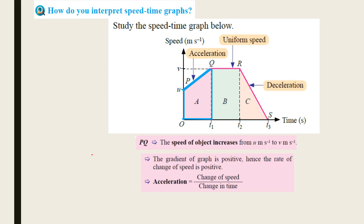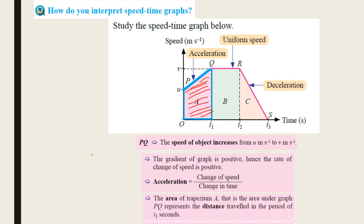The area under the graph represents the distance traveled. Here, the area under the graph for PQ forms a trapezium. That area represents the distance traveled in the period of t1. So you can find the distance traveled for segment PQ.